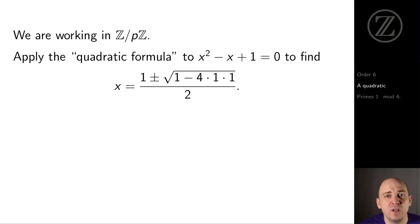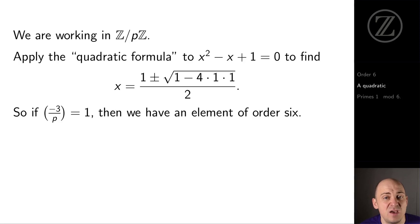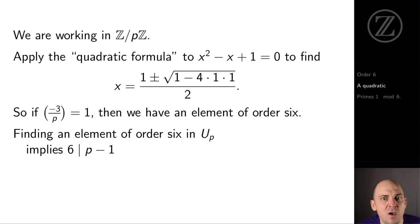By the quadratic formula, a root of that polynomial is 1 half 1 plus or minus the square root of 1 minus 4. So let's suppose that minus 3 on p is 1. So we actually have a square root of minus 3, and then we get an element of order 6. Because we have an element of order 6, we know that 6 divides p minus 1, or in other words, p is 1 mod 6.